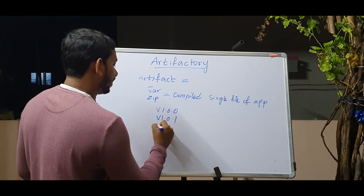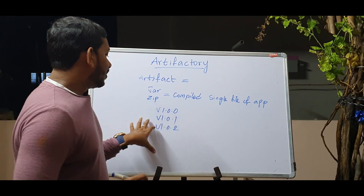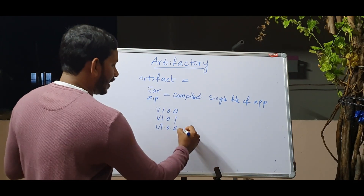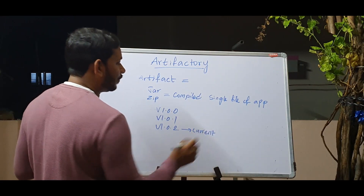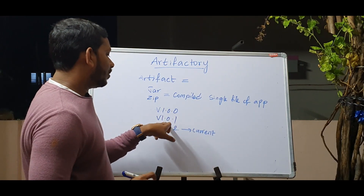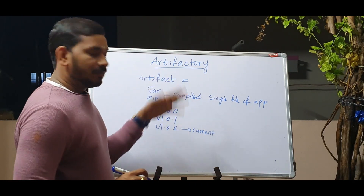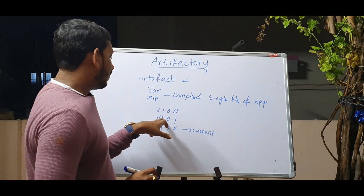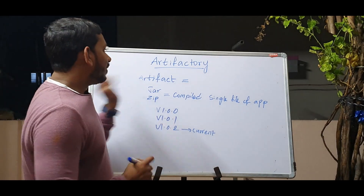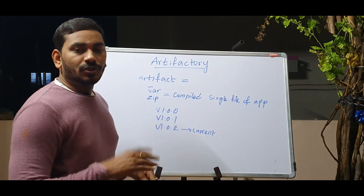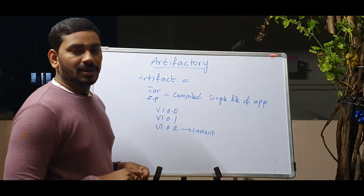For example, if you have an application at version 1.0.1, you can download that specific version of the artifact file and re-deploy it. So the artifact serves a main storage purpose — it is the storage for your application files.